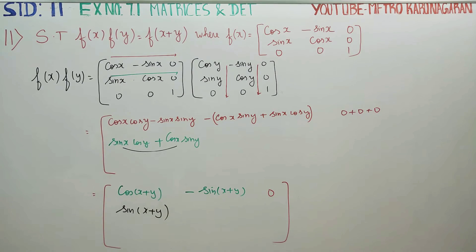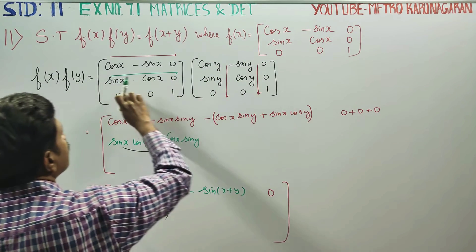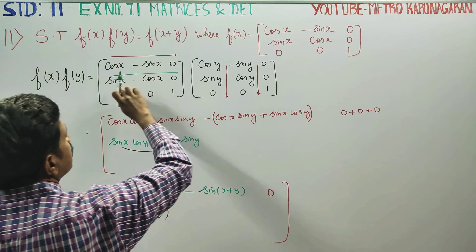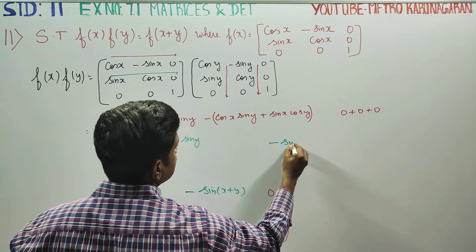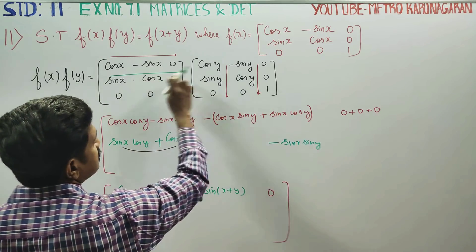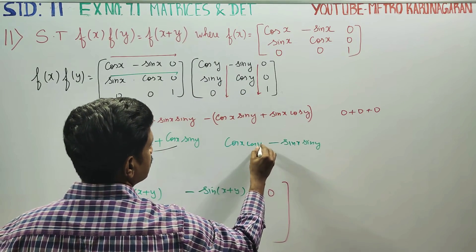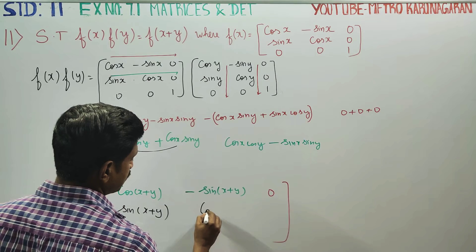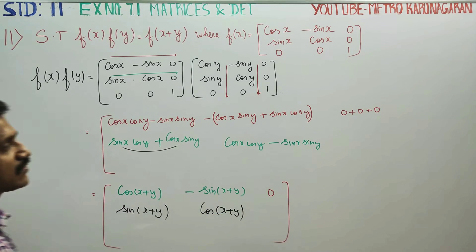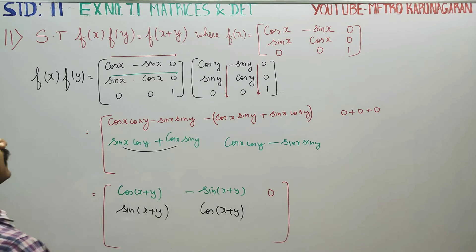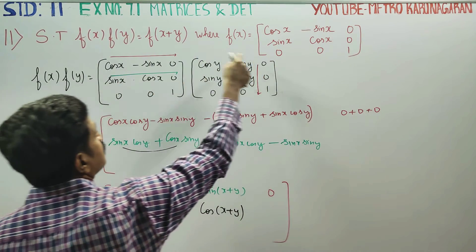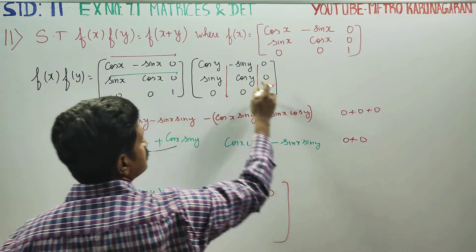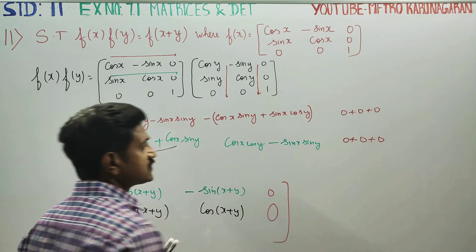This is sin(a+b) formula, giving sin(x+y). For the second row second column: sin x·sin y and cos x·cos y. cos a·cos b minus sin a·sin b is cos(a+b), so this gives cos(x+y). The last element of the second row: sin x into 0 is 0, cos x into 0 is 0, and 0 into 1 is 0, so the final answer is 0.